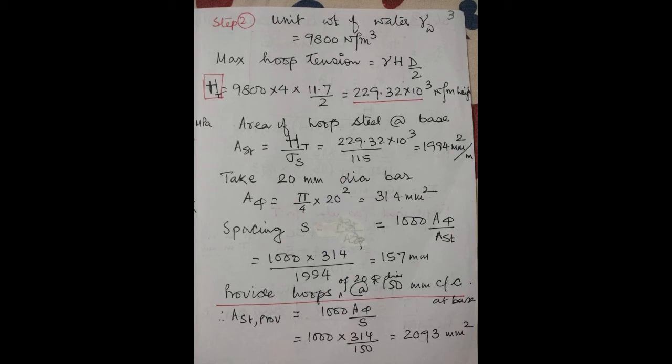Taking 20 mm diameter bars, area of one bar = π/4 × 20² = 314 mm². Spacing = 1000 × 314 / 1994 = 157 mm. Provide 20 mm diameter hoops at 150 mm center-to-center at the base. AST provided = 1000 × 314 / 150 = 2093 mm², which exceeds the requirement of 1994 mm².